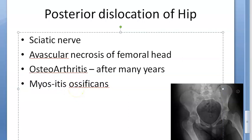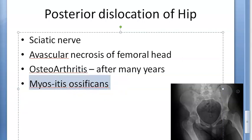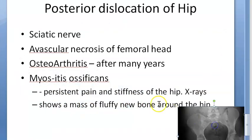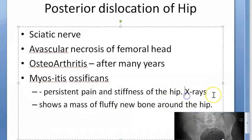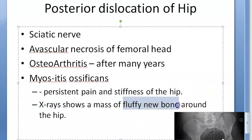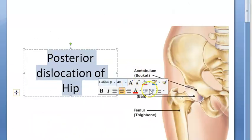The last complication to remember is myositis ossificans. Here there will be persistent pain and stiffness of the hip. On x-ray, you will see fluffy new bone around the hip — especially in patients with head injury. So myositis ossificans presents with persistent pain, stiffness of the hip, and x-ray showing fluffy new bone around the hip.